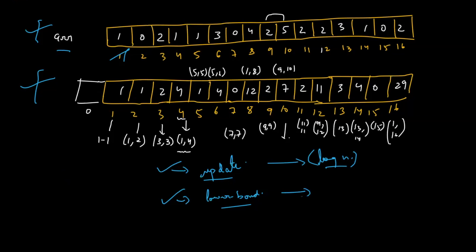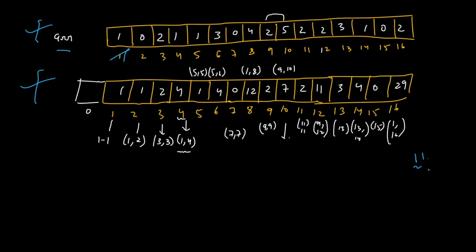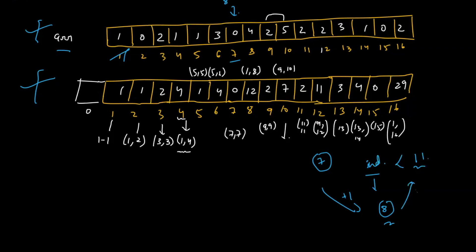Now, how do we find the lower bound efficiently? If we can find the rightmost index that gives a prefix sum less than 11 — in this case, index 7 has prefix sum 8 — we can simply add 1 to get index 8, which will have a prefix sum either equal to 11 or greater than 11. The second observation we will use is that every number can be represented as powers of 2, and we'll use that to solve it.